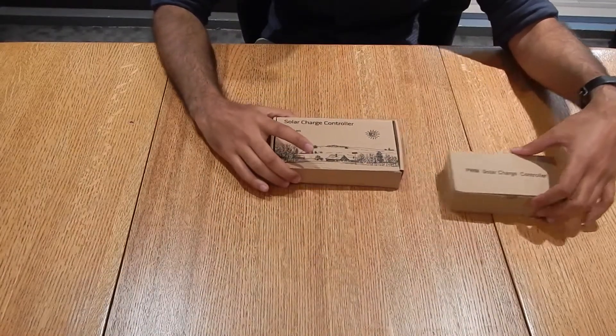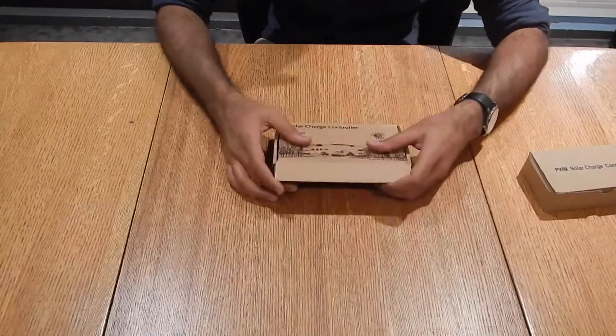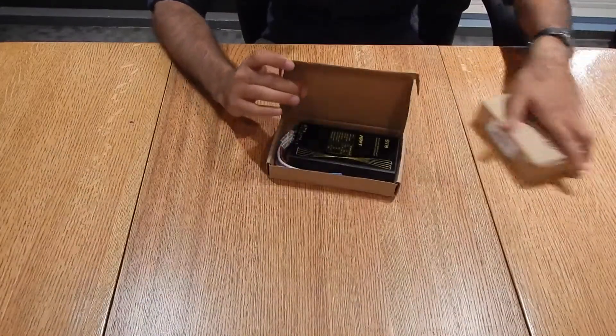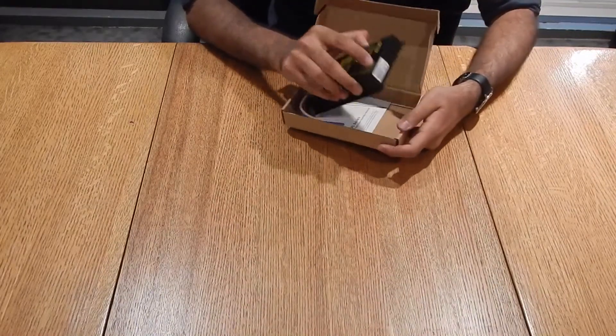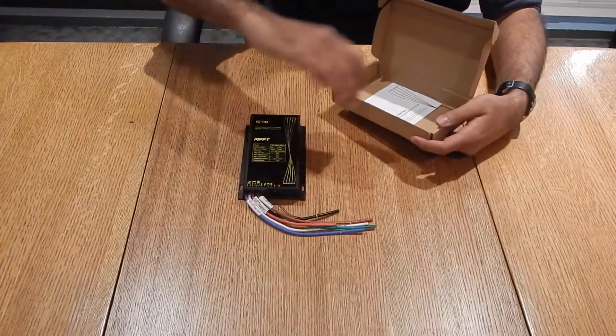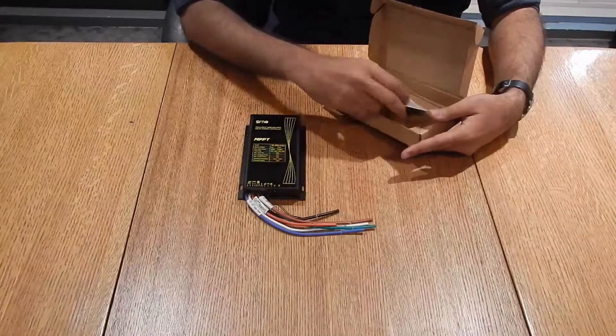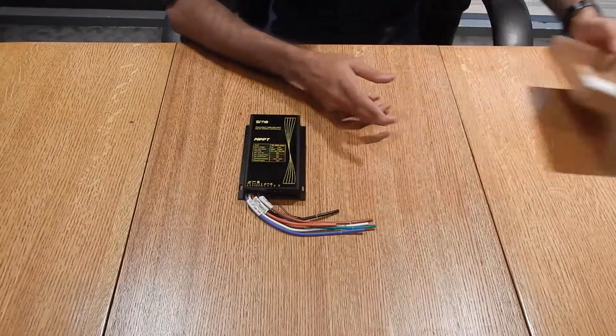Today we're going to be looking at the solar charge controller for the SRNE series. Let me show you what's inside the box. We'll get to this one in a while. Inside you'll find the charge controller itself and some paperwork for further instructions. It's a user manual.